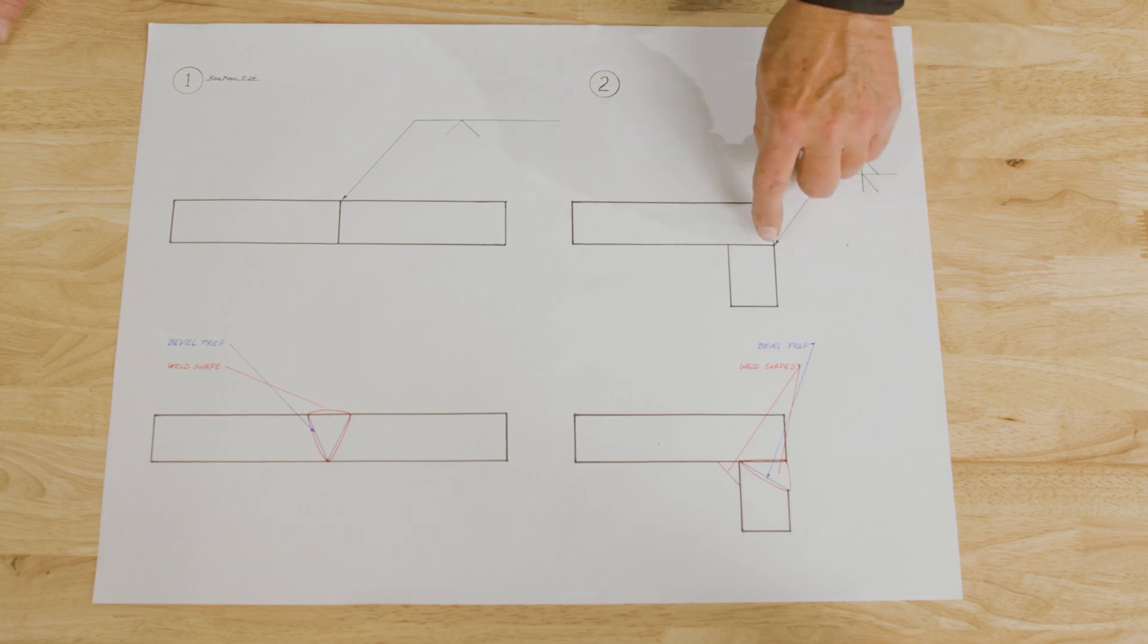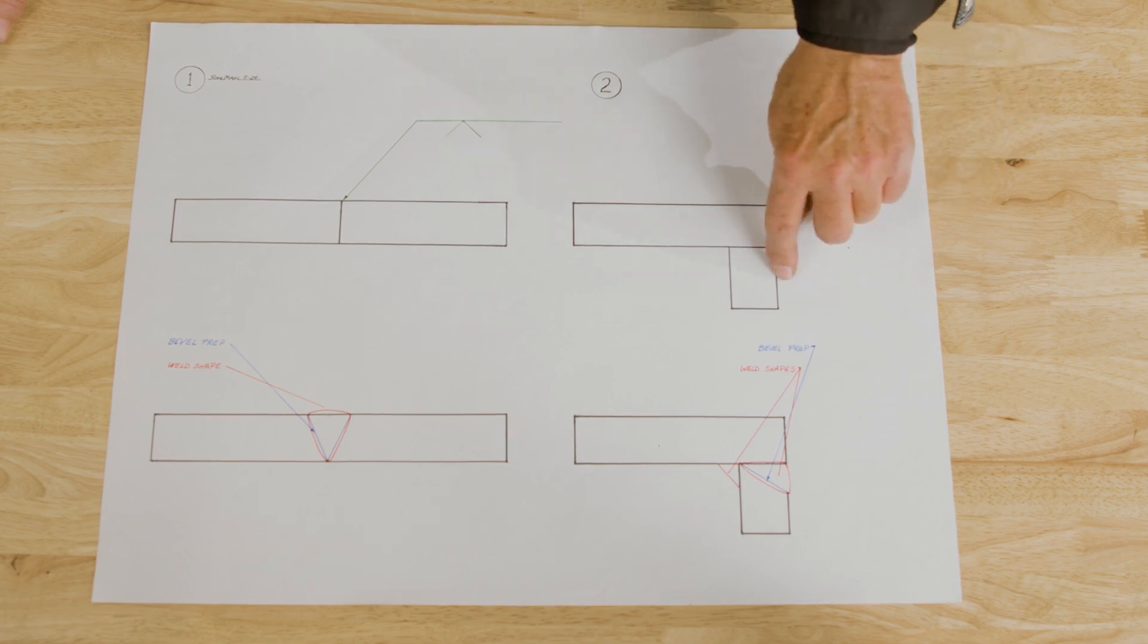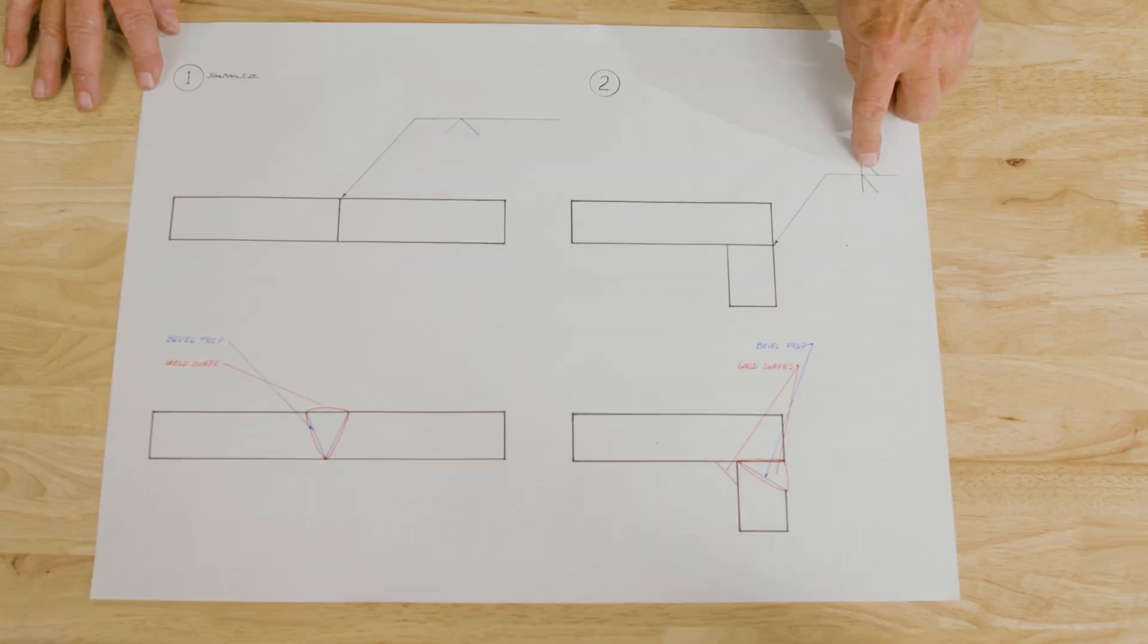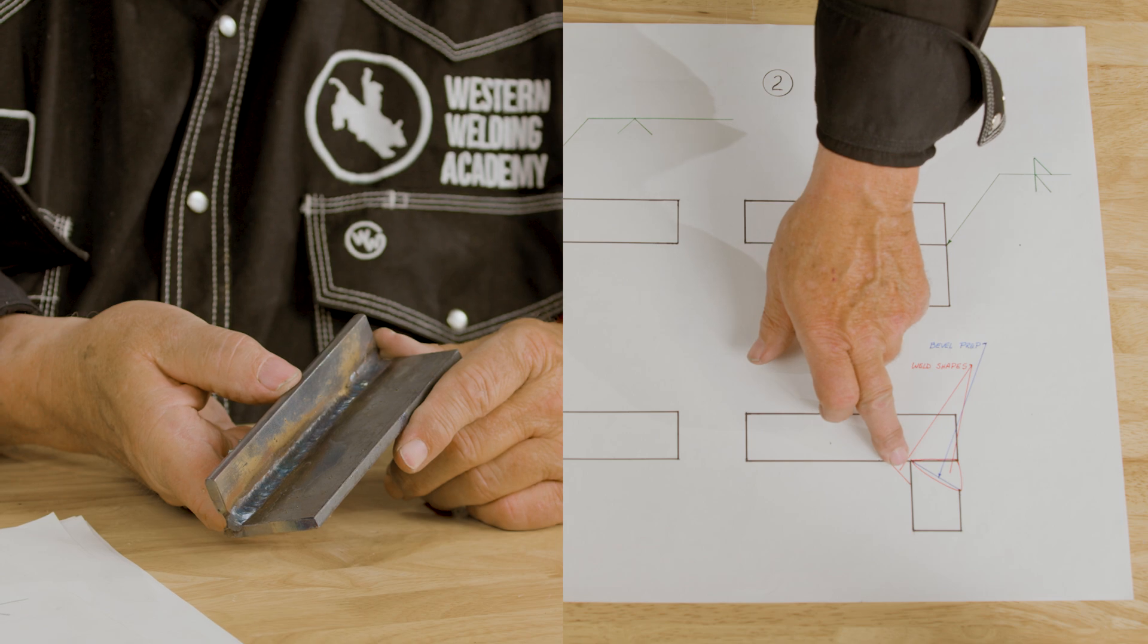So this is the arrow side that will go to this part of the symbol, which you can see here it does. This is the other side, so it goes across to here, which you can see that it does.